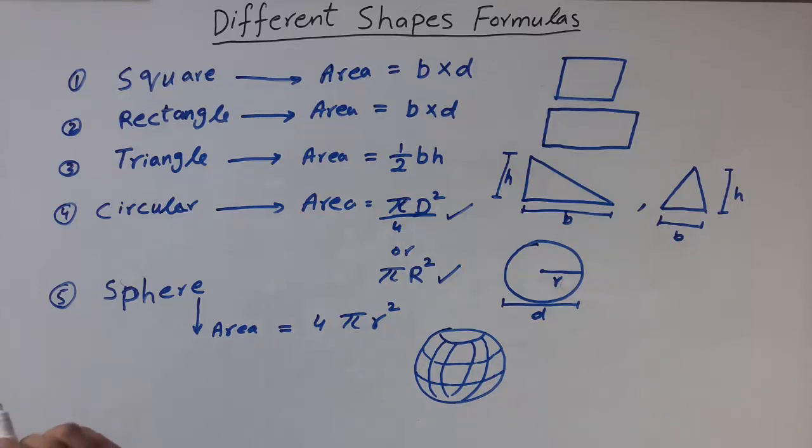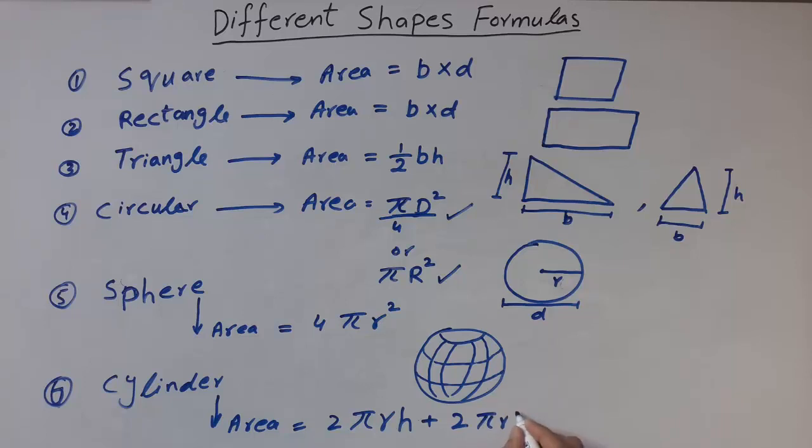The sixth one is a cylinder. Area of cylinder is equal to 2 pi R H plus 2 pi R square.